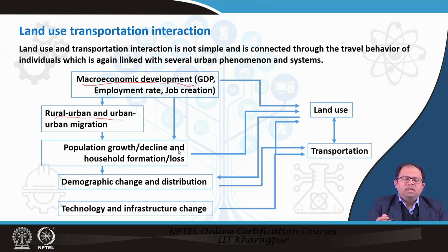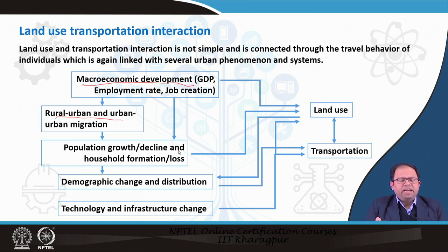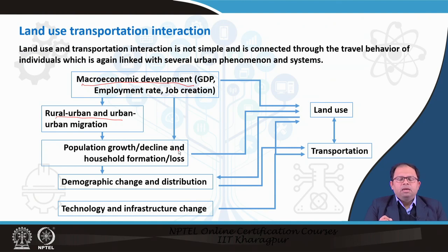When people are more prosperous, they will decide on certain life events. For example, they may go for a new family, create their own family, move out from their parents' houses and buy their own houses. Different events take place when the economy is good or there are jobs. When population growth and decline or household formation happens, it leads to change in demography — particularly the total number of people as well as the distribution of people in different zones in that urban area.